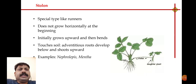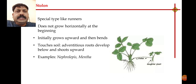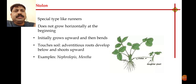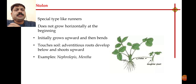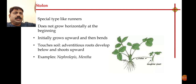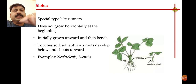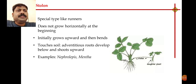The next method is the stolon, again similar to runner or sucker — it is a type of modification of the runner. From the basal region of the plant, it grows vertically upward initially, then bends down horizontally towards the soil. When the growing region of the stolon touches the surface of soil, from that region it starts producing adventitious roots. Examples are Nephrolepis and Mentha.